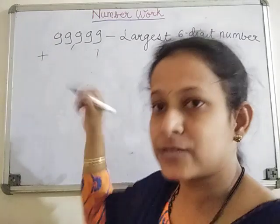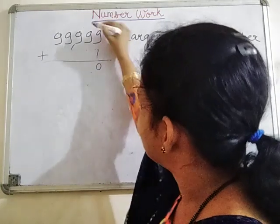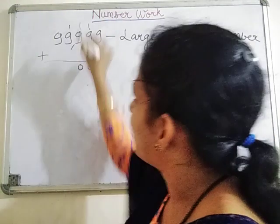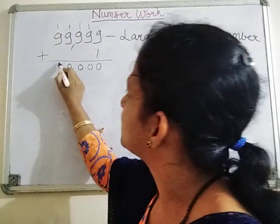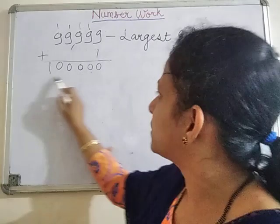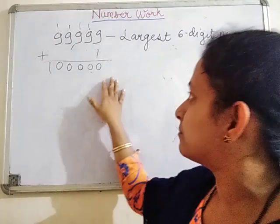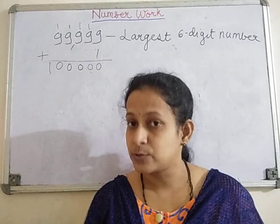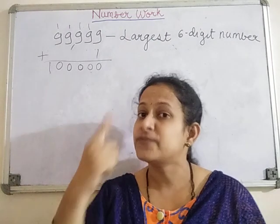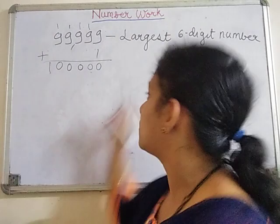Let's see what happens after adding one to ninety-nine thousand nine hundred and ninety-nine. Nine plus one equals ten, carry one. This happens repeatedly across all five digits. Now if you see, these are five digits, but here you are getting six digits. So this six-digit number is what we call lakh. When you add one to the largest five-digit number, you get a six-digit number called lakh.